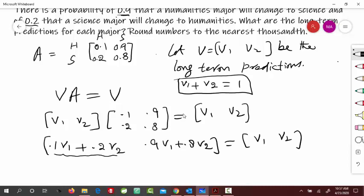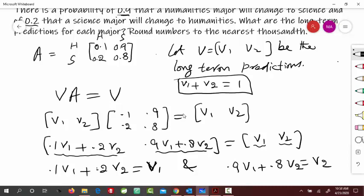So in order for both sides to be equal, the first component should be equal to the first component. So 0.1 V1 plus 0.2 V2, that should be equal to V1. And similarly, the second component should be the second component. So 0.9 V1 plus 0.8 V2 is equal to V2.